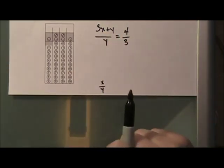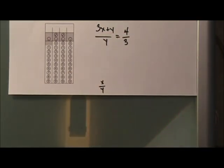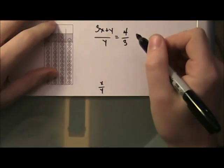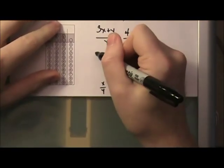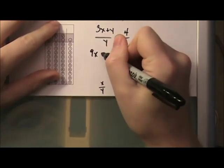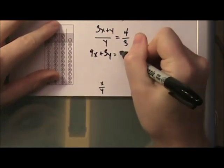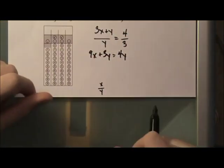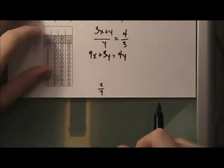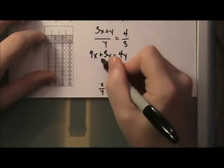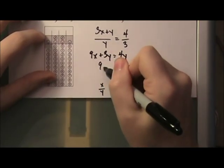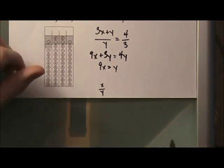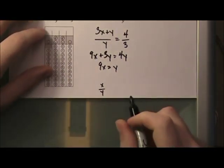So anytime you see a fraction equal to a fraction, I want you to think about cross-multiplying. That's certainly the most straightforward way of simplifying this. So let's cross-multiply here. We get 9x plus 3y equals 4y. Okay, multiply it across. And let's combine the y's. So we get 9x equals y, right? Okay, cool. Now, I need to get one side of this to equal x over y.